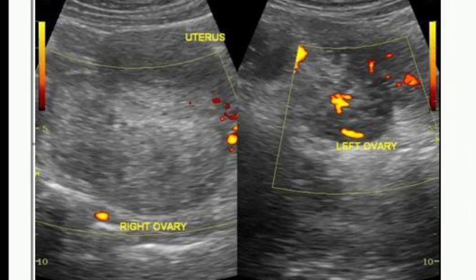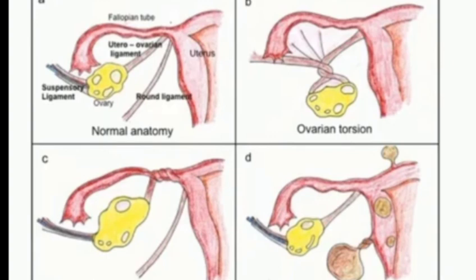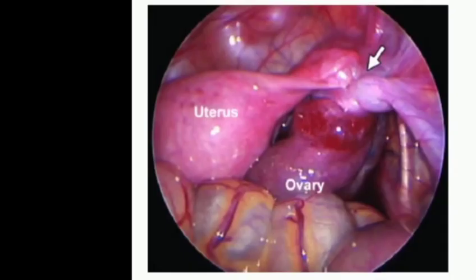Ovarian torsion is a condition in which the ovary becomes twisted around the tissue that supports it — the ovarian ligament and suspensory ligament of the ovary. Sometimes the floppy tube may also become twisted. This can cut off blood supply to these organs. Prolonged reduction in blood flow can lead to necrosis. The longer the condition goes untreated, the more likely complications are. It is a medical emergency — if not treated quickly, it can result in loss of an ovary.